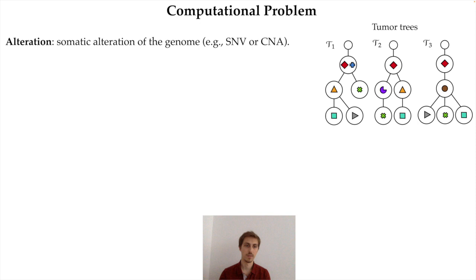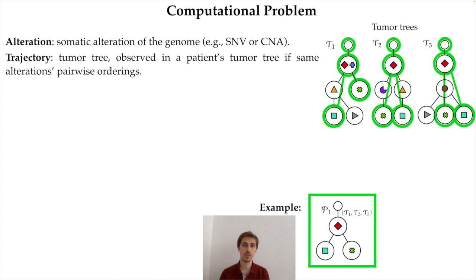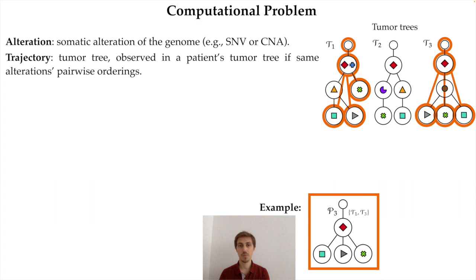Let me describe more formally the computational problem we want to solve. The alterations we consider can be any type of somatic alterations of the genome, such as SNVs or copy number alterations. We define a trajectory as observed in a patient's tumor tree if all pairwise orderings of alterations are the same in the trajectory and in the tumor tree. For example, here we show a trajectory composed of three alterations observed in all tumor trees, with alterations highlighted in green. Note that alterations are not necessarily consecutive in the tumor trees — only their order must be the same.